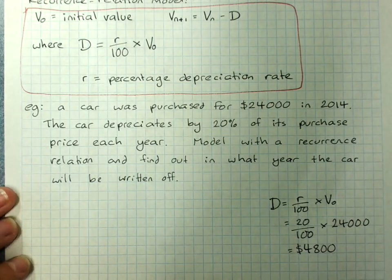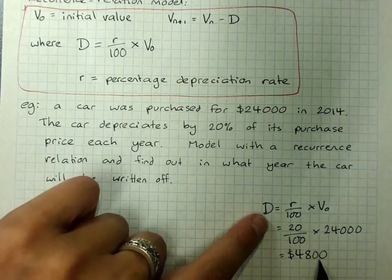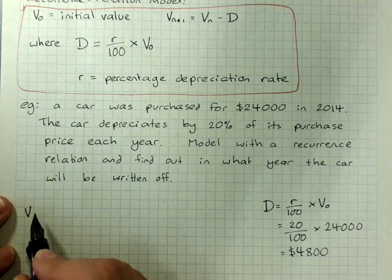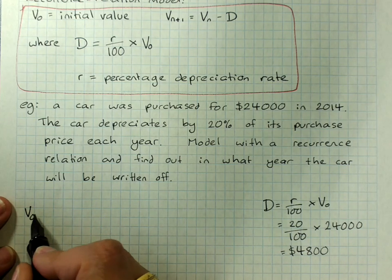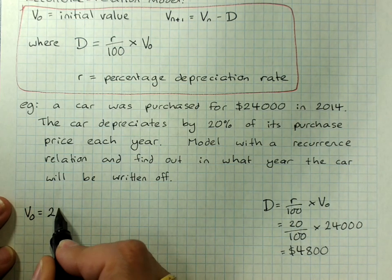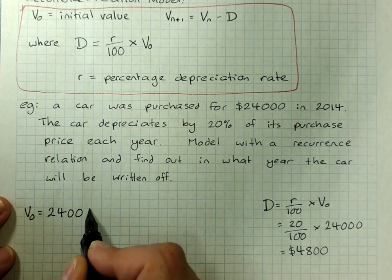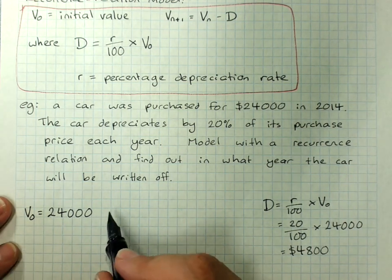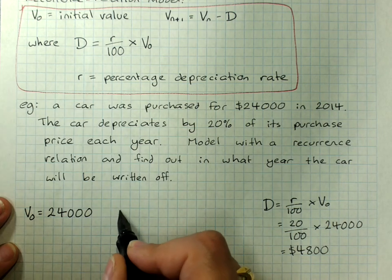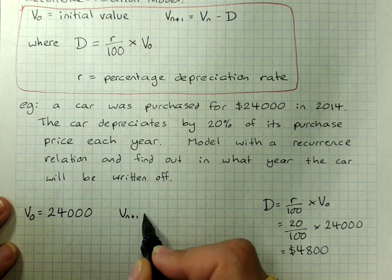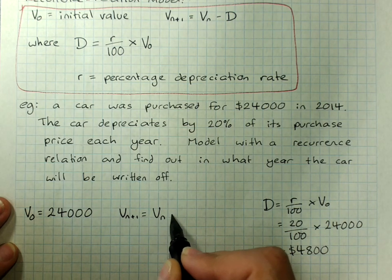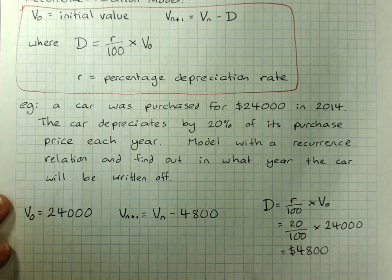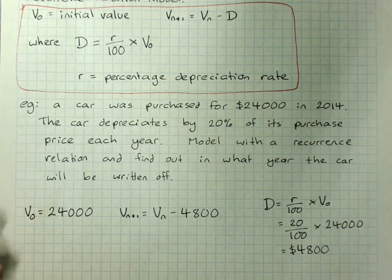So now that we have our common difference, our recurrence relation model is: V0 = 24,000, and Vn+1 = Vn − 4,800. That's our recurrence relationship.